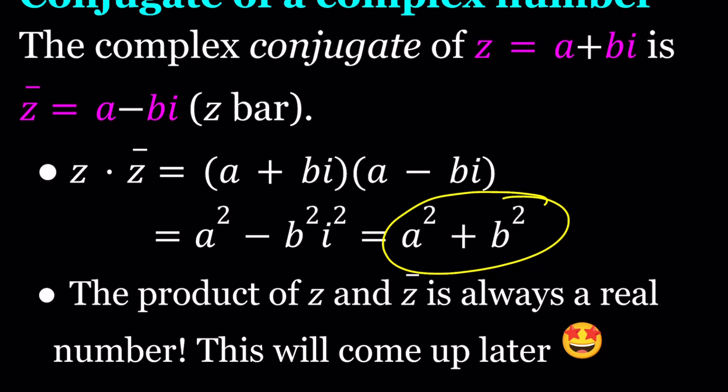You always get a real number by multiplication, but not only that, you also get a real number by addition. If you add z and z bar you get a real number, which also implies by Vieta's formulas that if you have a quadratic equation with real coefficients, the solutions can be complex, and if they are, they are complex conjugates. Pay attention to a squared plus b squared because that is going to come up later.